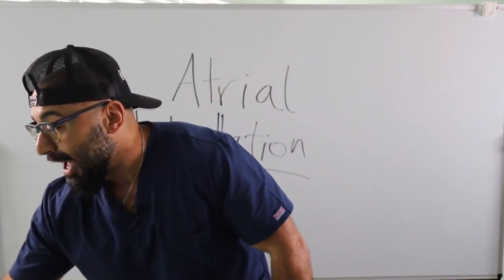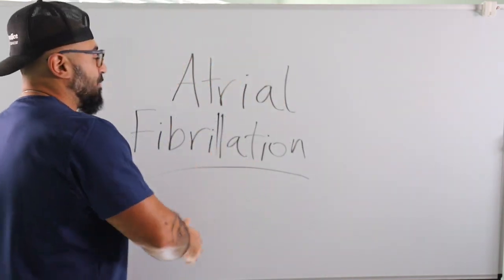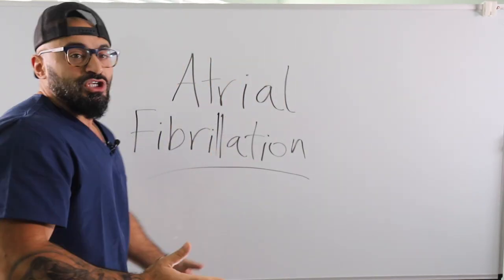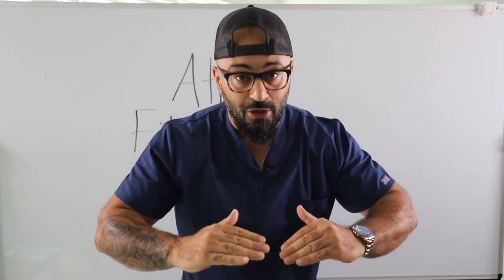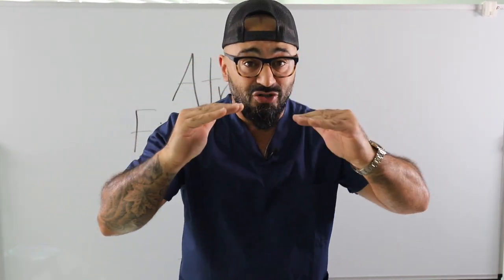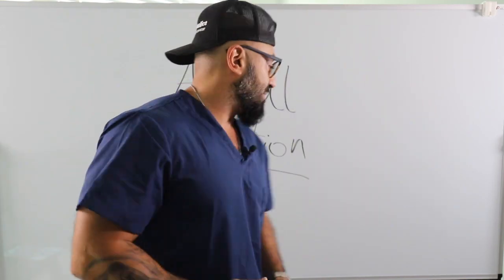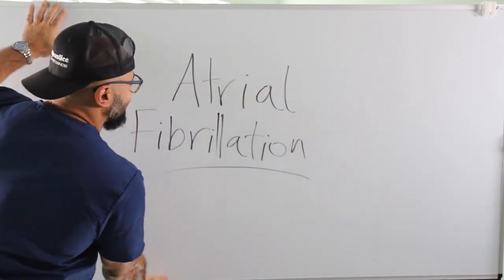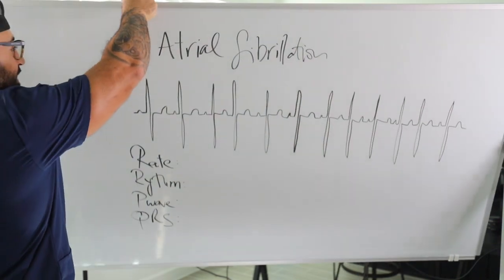Now let's talk about ECG - atrial fibrillation. There are atrial arrhythmias and ventricular arrhythmias - the heart has four chambers. We're going to talk about just atrial fibrillation, which is an atrial arrhythmia. You can tell from the name. Let me flip the board.